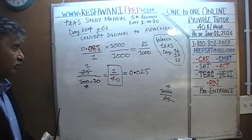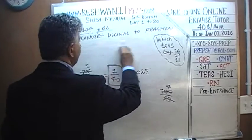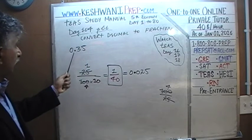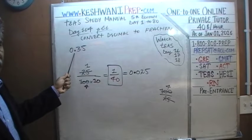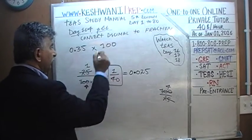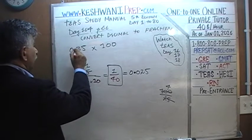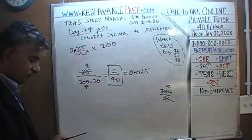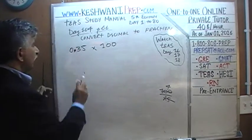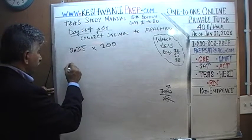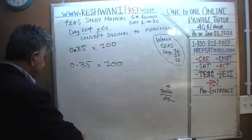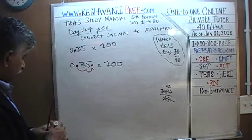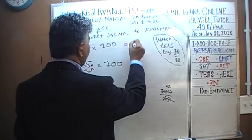Let's do the next one. This time we convert 0.35 into a fraction. We want to convert 0.35 into a whole number. We can easily do that by multiplying it by 100. If you multiply 0.35 by 100, we pick up the decimal and move it two spots to the right — 1 and 2 — and it becomes 35. So 0.35 times 100 is 35.